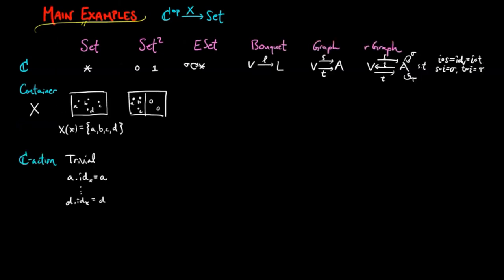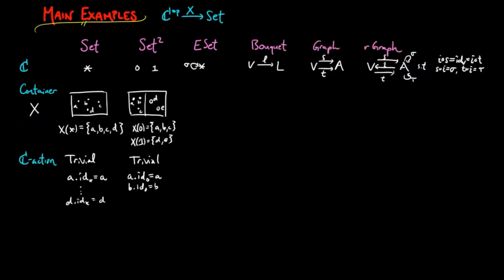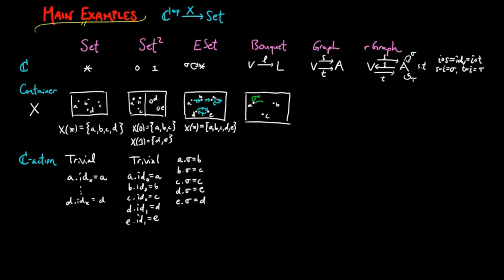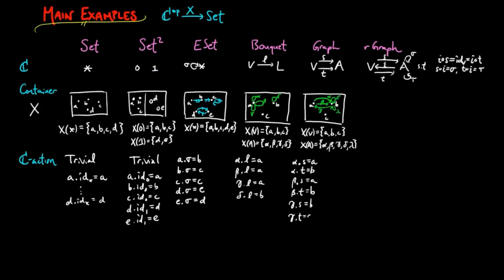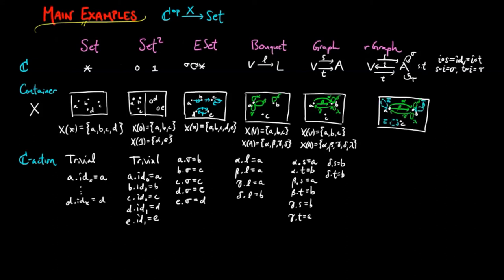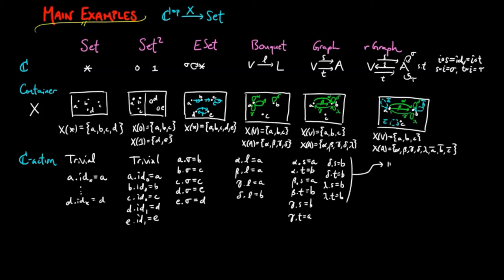We recall how to visualize the containers, which we discussed in previous videos. If you're unsure how the right action by the category C behaves, please pause the video and make sure you understand that a pre-sheaf, or container as we're calling them, has a set of figures for each object in C, and a boundary or process operator for each morphism in C, which is a set map between the sets of figures.